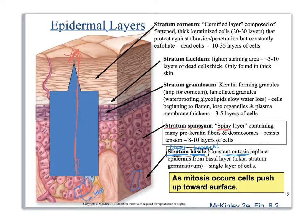The next layer is called the stratum spinosum, or the spiny layer. The spines are actually desmosomes — they look like little cactus spines and act as ties that connect two cells together. These desmosomes really help with resisting tension.